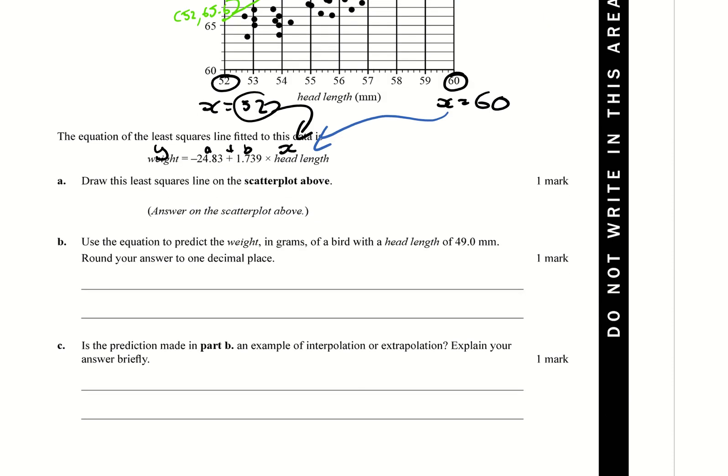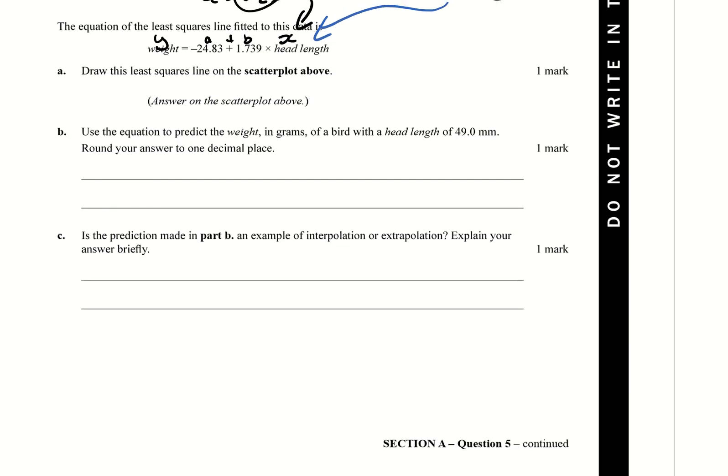Part B is asking, use the equation to predict the weight in grams of a bird with a head length of 49mm. All you need to do for this one here is weight equals minus 24.83 plus 1.739 times 49.0, and that would give you a value of 60.4 grams.